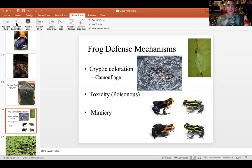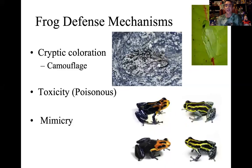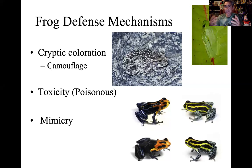We continue with this really fascinating group. We've looked at the general biology, now we get into the ecology. If you're a little frog or toad out in the world, there are a lot of predators. You're quite low in the food chain, so there are a lot of defenses we see happening with these groups.